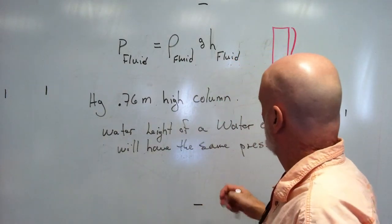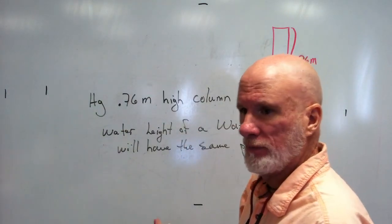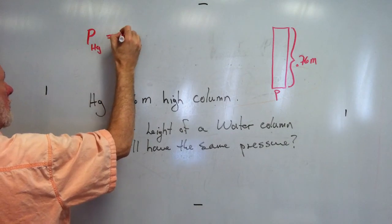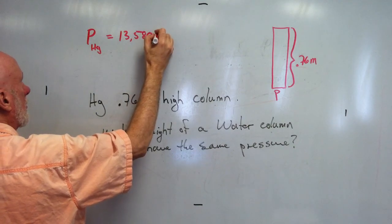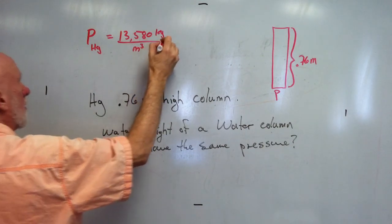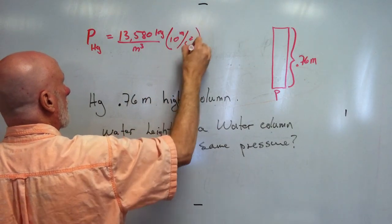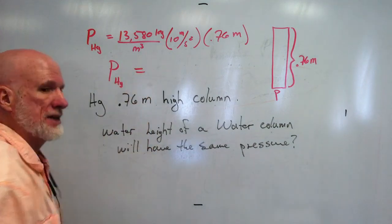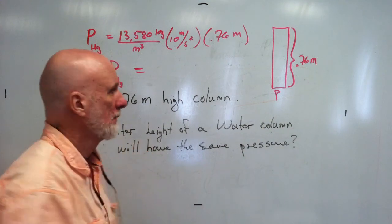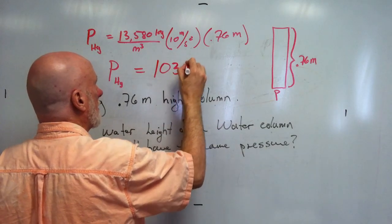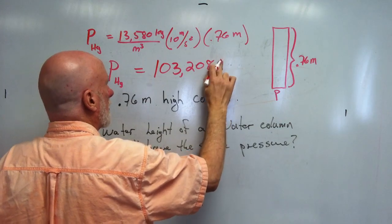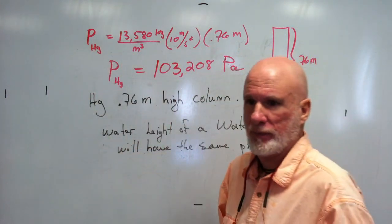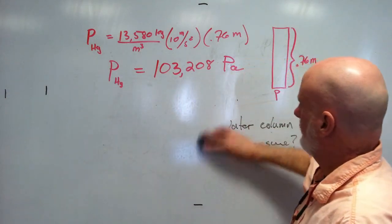It would be 103,208 pascals. You get that by taking the density of mercury, which is 13,580, times 10 times 0.76. That gives you 103,208 pascals. Correct — so far so good.